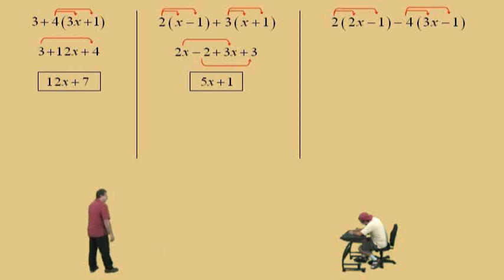Okay. Now, Charlie, 2 times 2x is 4x. Now, 2 times the negative 1 is negative 2. Negative 4 times 3x? Negative 12x. And negative 4 times negative 1 is plus 4. It works.